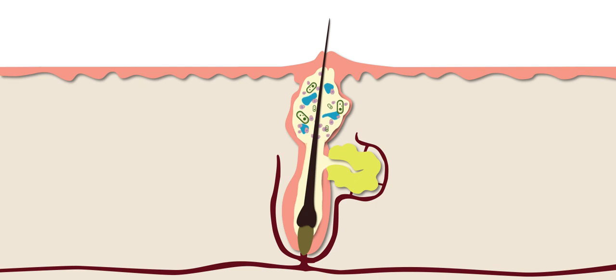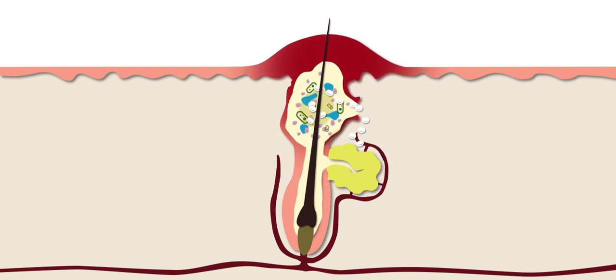As the blockage grows, it can create a split in the hair follicle wall. White blood cells rush in to fight the bacteria inside the blockage, causing inflammation of the surrounding skin and a pocket of pus to form, which is made up of dead white blood cells, bacteria, and other debris.